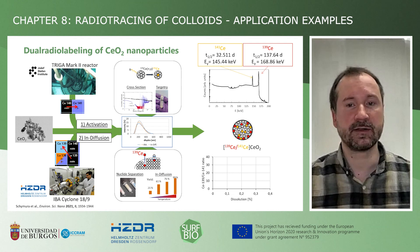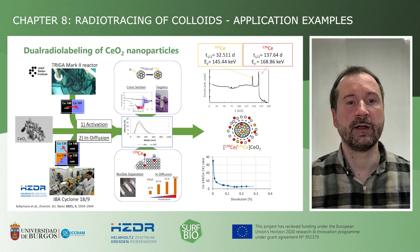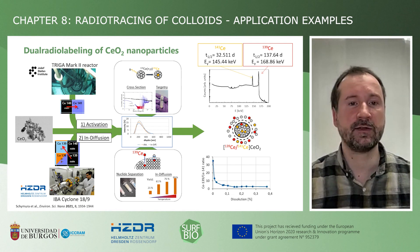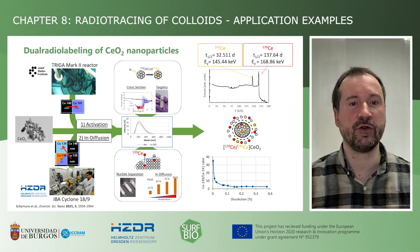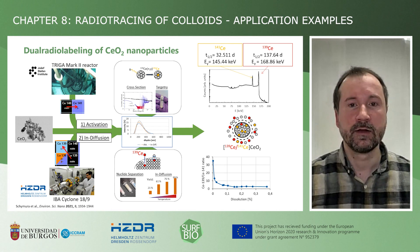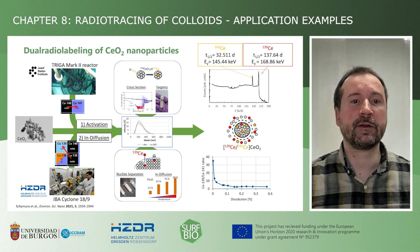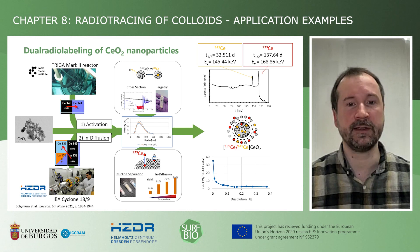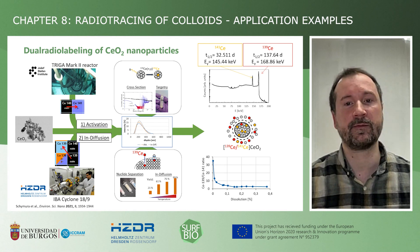Going through these processes gives us dual-labeled ceria nanoparticles with the two radiolabels distinguishable by their specific gamma emissions. Now we can track dissolution phenomena by tracking the Cerium-139 to Cerium-141 ratio in a single experiment. Should we detect an increase of the nuclide ratio of cerium, the ceria must have gotten where it is via a dissolution-based pathway.